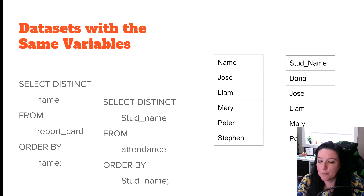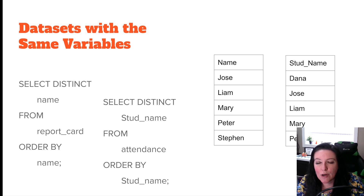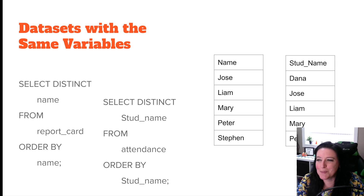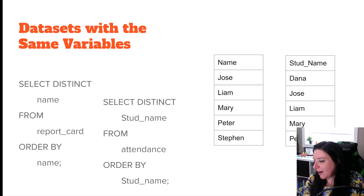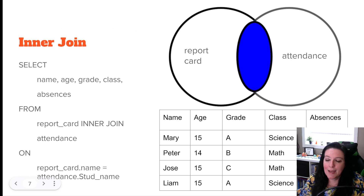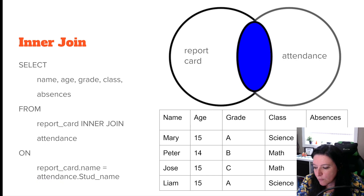When merging tables and pulling information from them collectively, we need some overlap — some names must match. If none of the names are the same, we can't pull combined information, only from each individually. This brings us to different types of joins: an inner join, an outer join, a left join, or a right join.